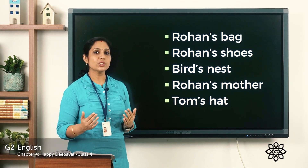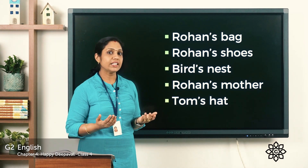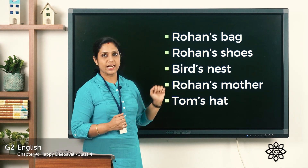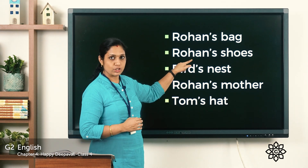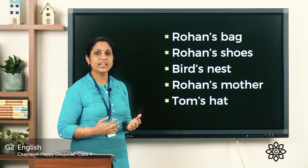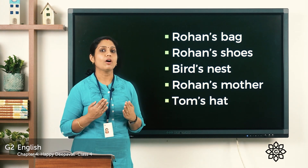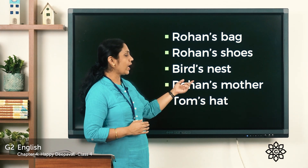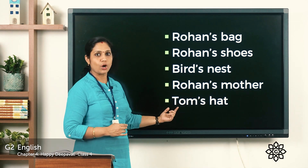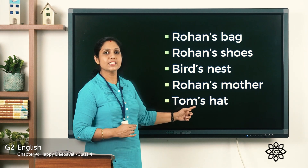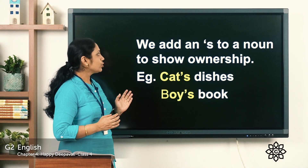We write 'Rohan's shoes' to say the shoes belong to Rohan — Rohan, apostrophe, s. 'Bird's nest' means the nest belongs to the bird — bird, apostrophe, s. 'Rohan's mother' means the mother is of Rohan. 'Tom's hat' means the hat belongs to Tom — Tom, apostrophe, s. We add apostrophe-s to a noun to show ownership, that is, to show belongingness.